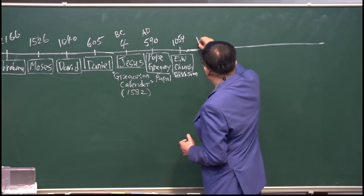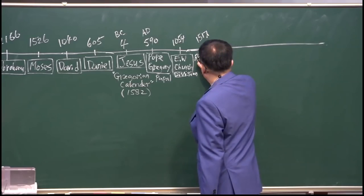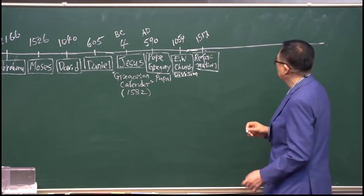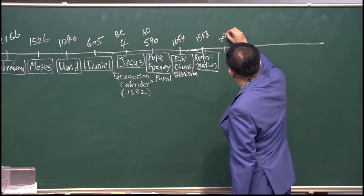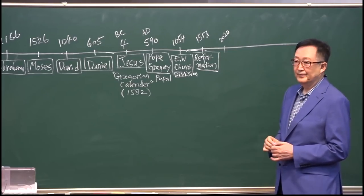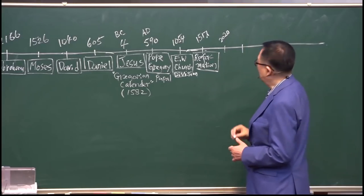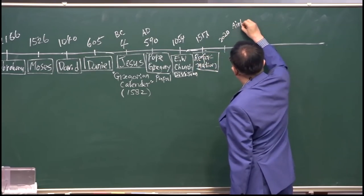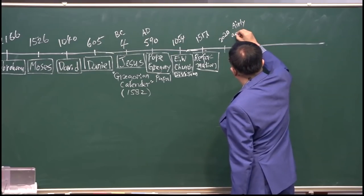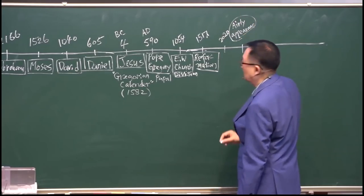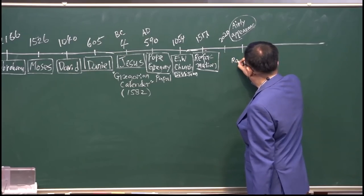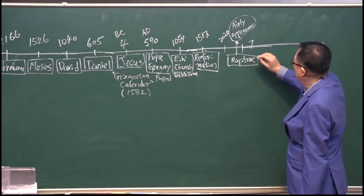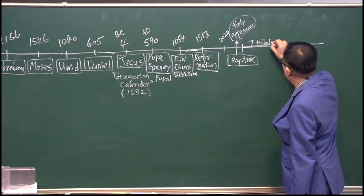1517년에는 종교개혁(Reformation)이 일어났어요. 지금은 2020년에 있고요. 언젠지는 모르지만 예수님의 공중 재림(Early Appearance)이 있을 거예요. 그때 우리가 들림 받는 거예요(Rapture). 그 다음에 7년 환란(7 Year Tribulation)이 있어요.